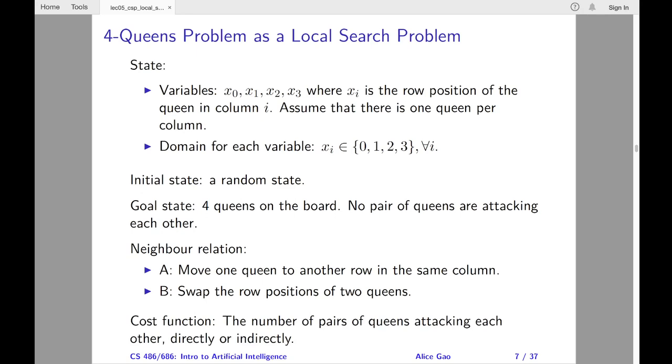Finally, here's the cost function. We want to minimize the number of pairs of queens attacking each other, either directly or indirectly.